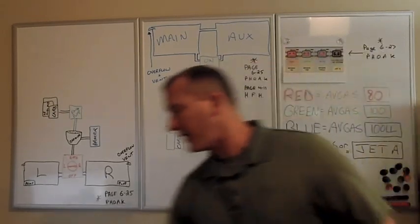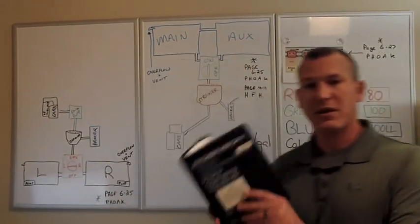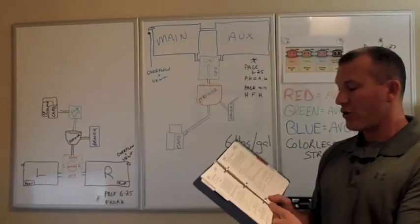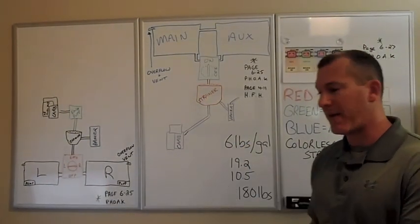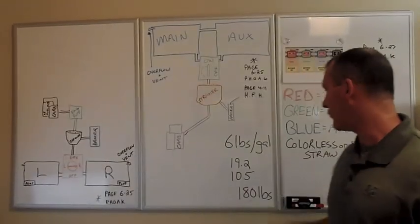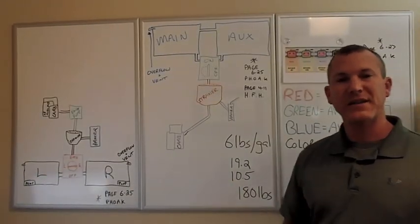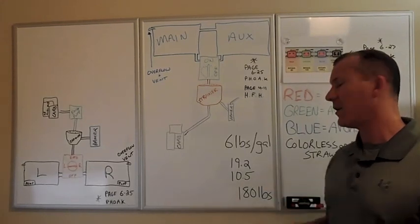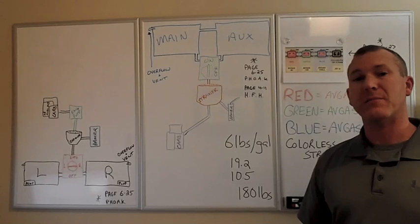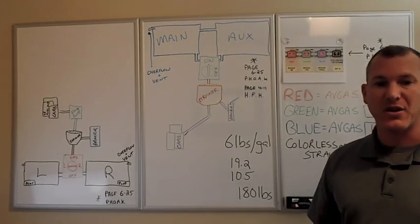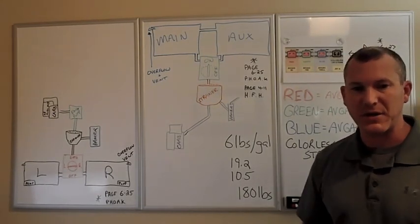So in the R22, for instance, in the POH, you could find this information in chapter two down here and it talks about the fuel capacity. It says usable and unusable fuel. So in this case, a main tank in an R22 can have 19.2 gallons of usable fuel and then the aux tank 10.5. So that's something that you need to know as a pilot. You need to know where to find it and you need to know how to use that information.